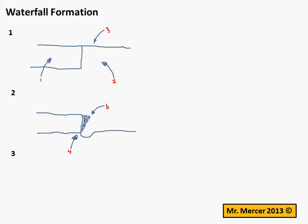At point five, you want to show that there is an overhang of unsupported hard rock ready to collapse.